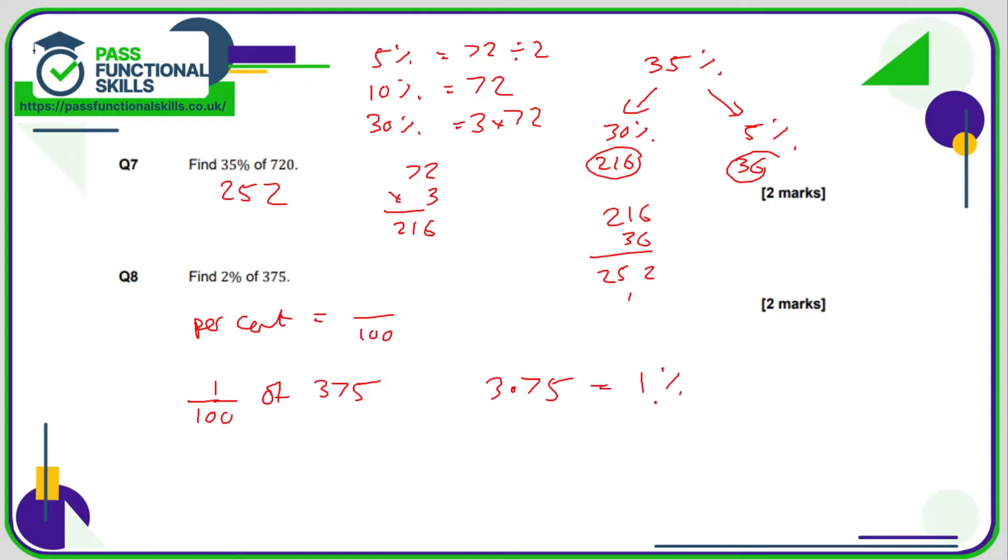So if 3.75 is 1%, then 2% is going to be two 3.75s. So you can either add 3.75 and 3.75 or multiply 3.75 by 2. Adding's a lot easier usually, isn't it? 5 plus 5 is 10, carry the 1. 7 plus 7 plus 1 is 15, carry the 1, 3, 6, 7. So the answer is 7.5.